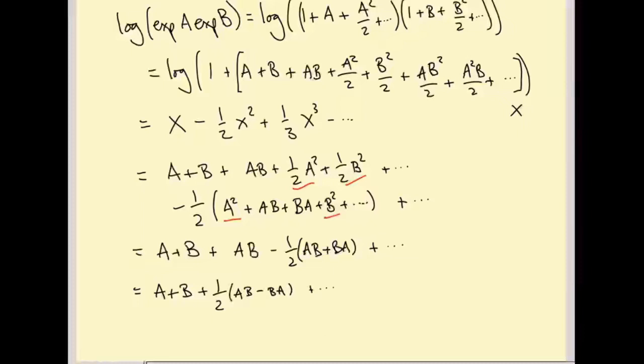So this quantity here, AB minus BA, is going to turn out to be very, very important in this course. So it's got a name. It's called the commutator, or the bracket of A and B. It's written like this: A, B, in square brackets with a comma between them. This is AB minus BA. Let me put a box around this, because it's so important. And you can see this vanishes if A and B commute, which is why it's called the commutator.